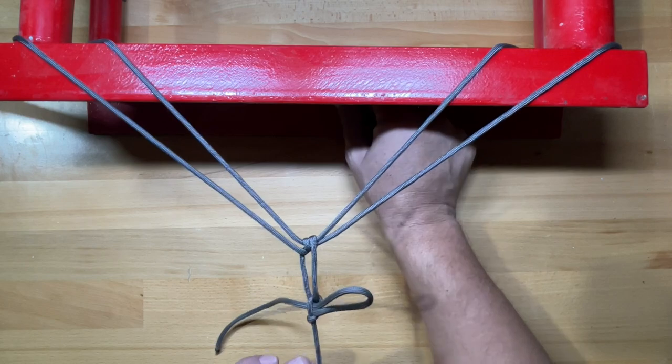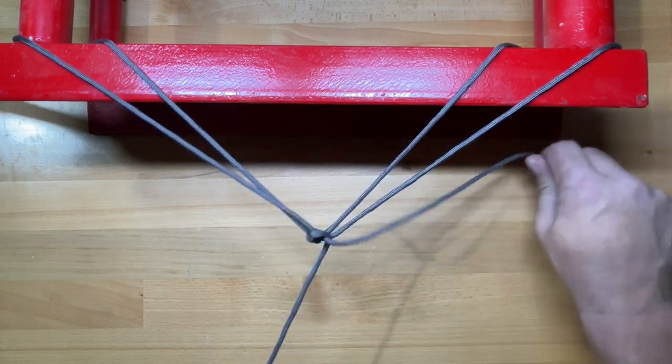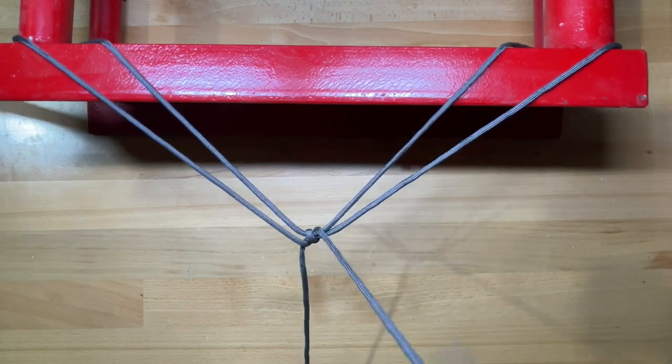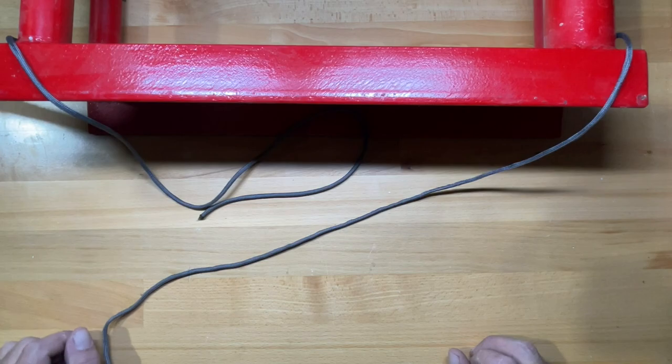But the constrictor loop is pretty quick and it allows a slip function so you can pull this one off or untie it very easily. And that is the axle hitch. Now let's go take a look at it on a vehicle.